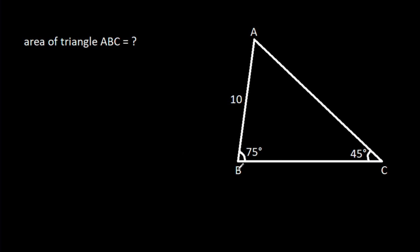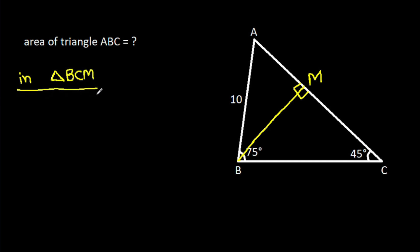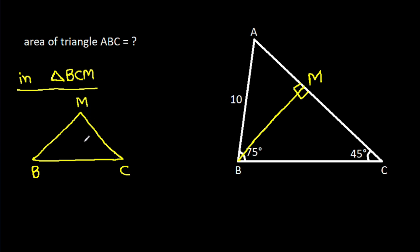So, from point B, if we make a perpendicular on AC — suppose this point is M — then in triangle BCM, this angle is 90 degrees, this angle is 45 degrees, so this angle will also be 45 degrees.